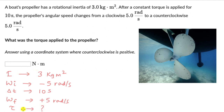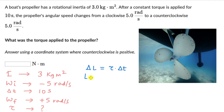Angular momentum changes when there is a torque applied over a certain interval of time. So ΔL = τ·Δt. Just like how linear momentum is changed when a force is applied over a time interval, angular momentum is changed when a torque is applied over a time interval. So we can expand: ΔL = Lf - Li = τ·Δt.